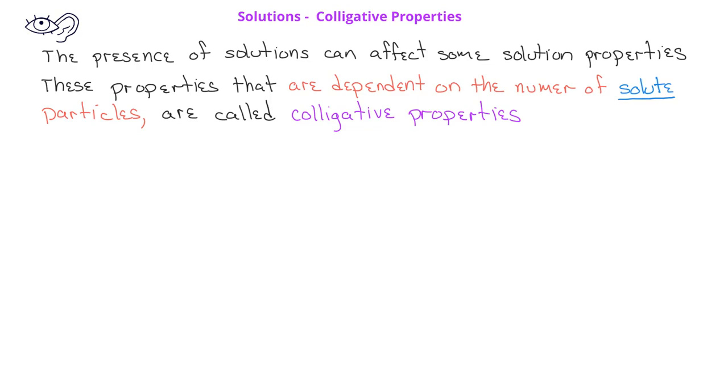If you live in an area where they salt the roads in winter, you've already experienced one kind of colligative property. That's known as freezing point depression. In these situations, they salt the roads so that the salt, as a solute, will lower the freezing point of the water.